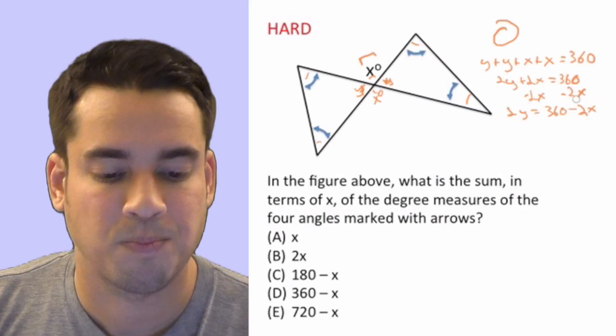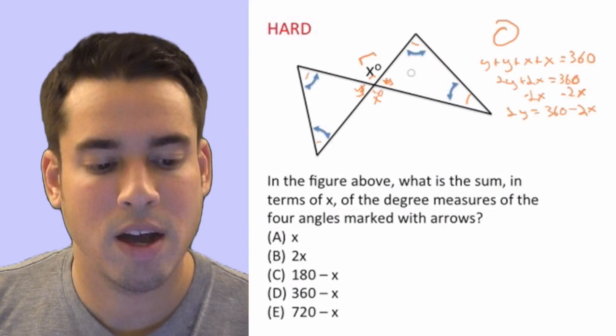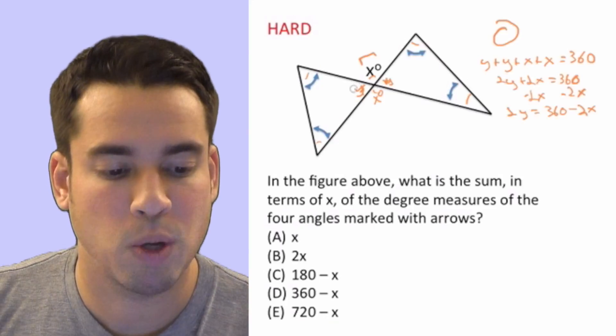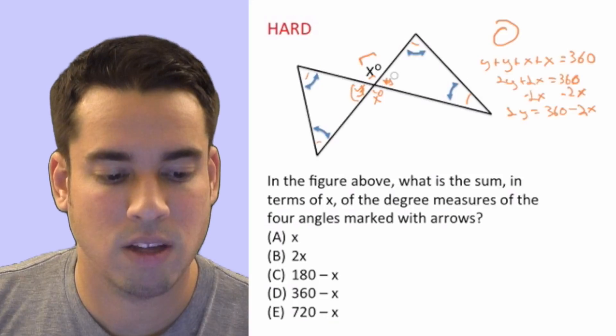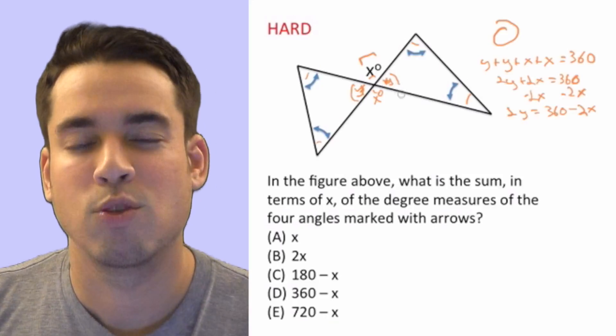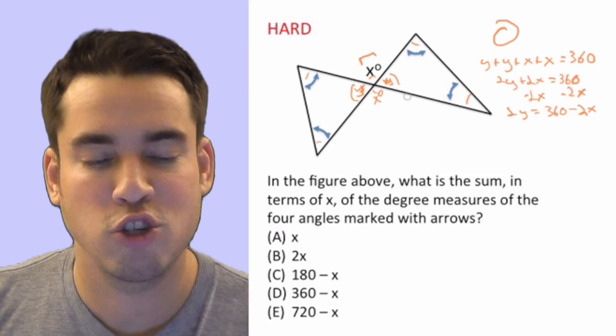Now we got 2y. That means 2y is basically both of these angles, we've got this angle and this angle. Do we need to simplify this any further? No, we don't. Here's why.